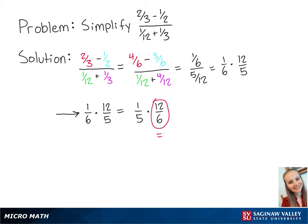Now 12 sixths is equal to 2. So this equals 1 fifth times 2, which equals 2 fifths.